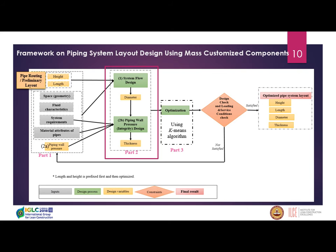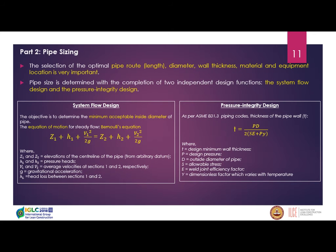Part two involves pipe sizing after obtaining the preliminary pipe layout. It involves two independent design functions: system flow design and pressure integrity design. The system flow design gives the minimum acceptable diameter using Bernoulli's equation and the equation of motion — a summation of datum head, pressure head, and velocity head. The pressure integrity design, given by code, provides the pipe thickness using design pressure and stresses.